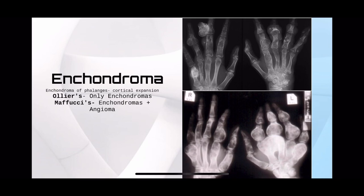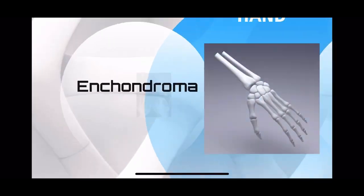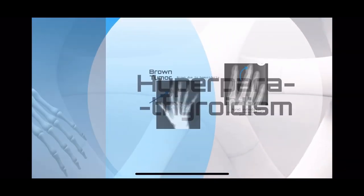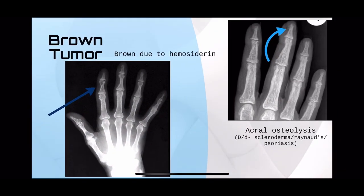You should know the difference between the two. In hyperparathyroidism, you see something called a brown tumor — it's not actually a tumor, that's a misnomer — it's brown because hemosiderin is deposited there. You can see a small cell in the phalanges, middle phalanx, index finger — that's the brown tumor. You can also see acral osteolysis, which is not pathognomonic and can be seen in renal disease, psoriasis, etc.